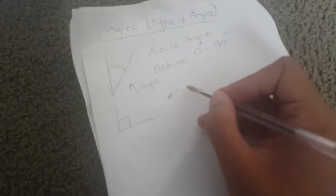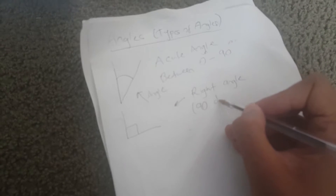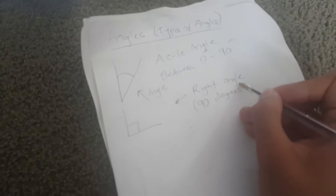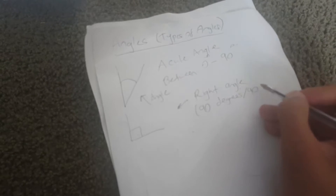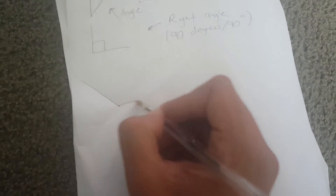Now when you see this, these two lines are actually perpendicular. This is what I call a right angle, and a right angle is actually 90 degrees.